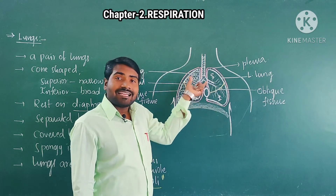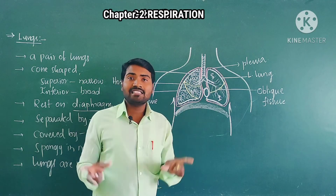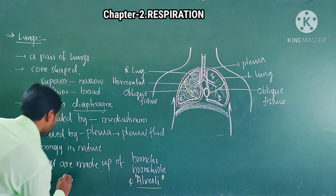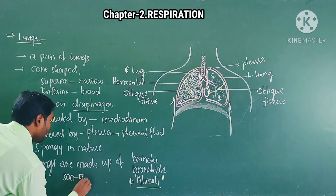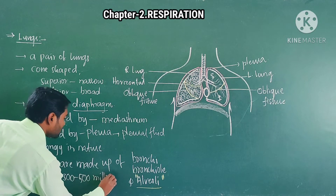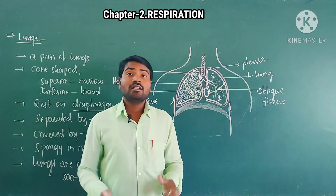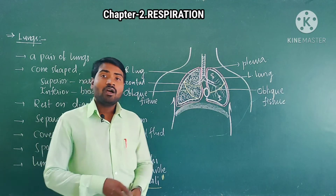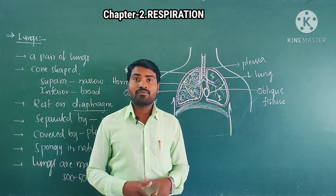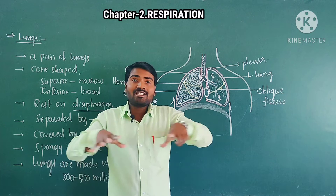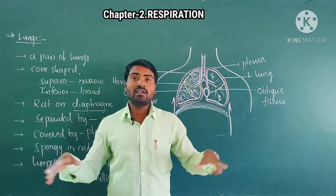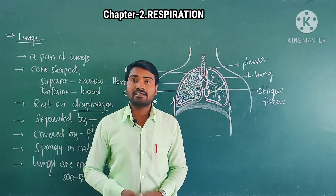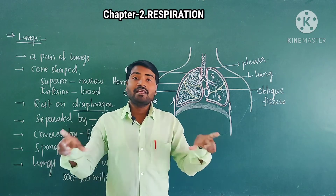The total lung is made up of alveoli. Nearly 300 to 500 million alveoli are present in each lung. This increases the surface area of the lungs, which helps in the exchange of gases. More gas is exchanged in the lungs, which is why alveoli are present in such large numbers.